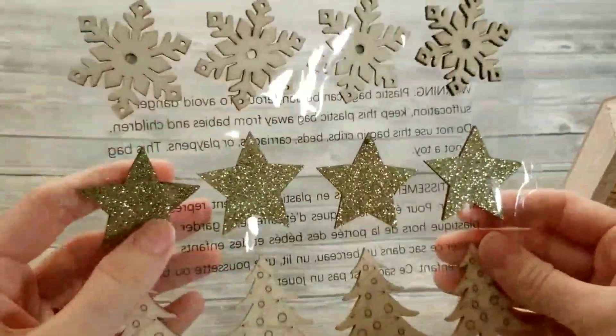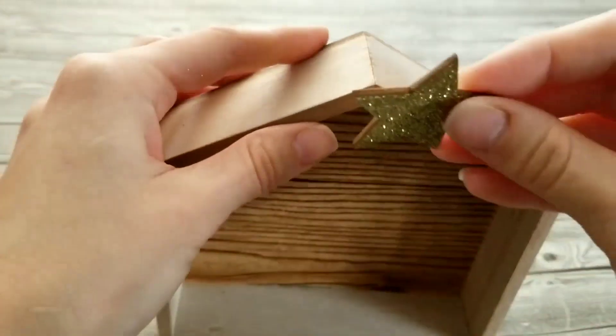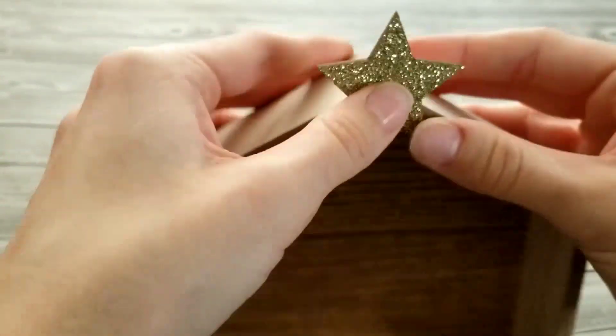Next, I'll be adding one of these gold star stickers to the front of my house. You may have to use some hot glue to keep it in place. The sticker isn't super strong.